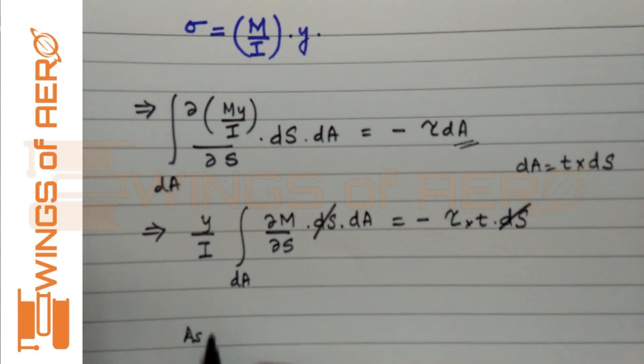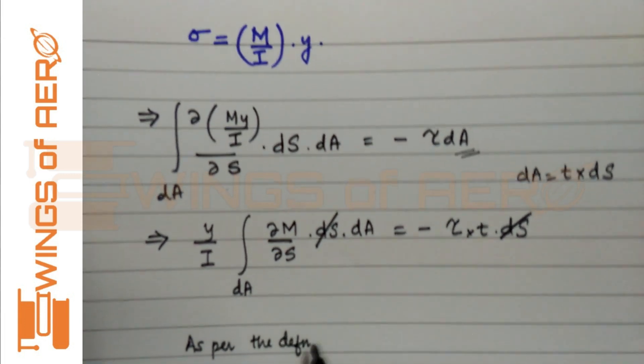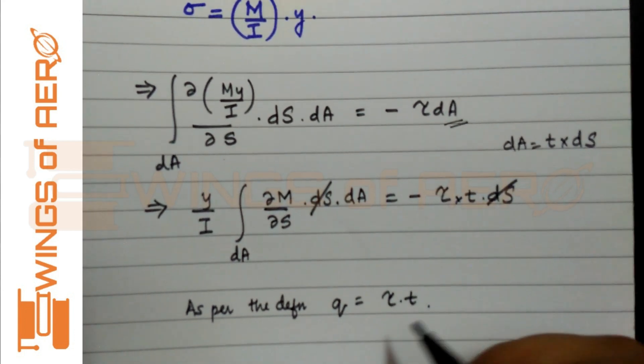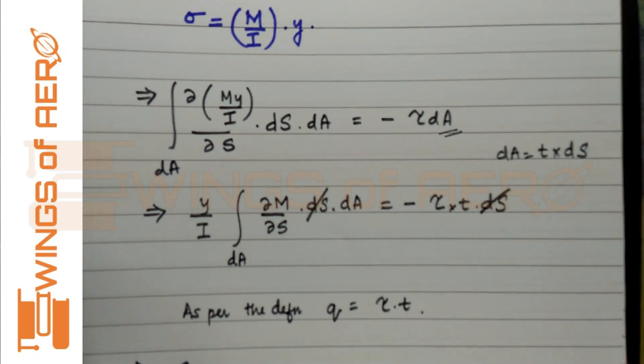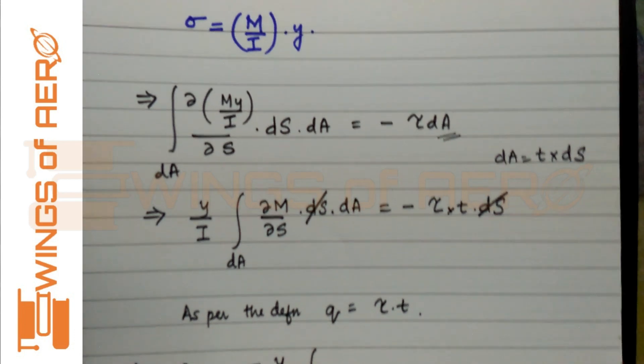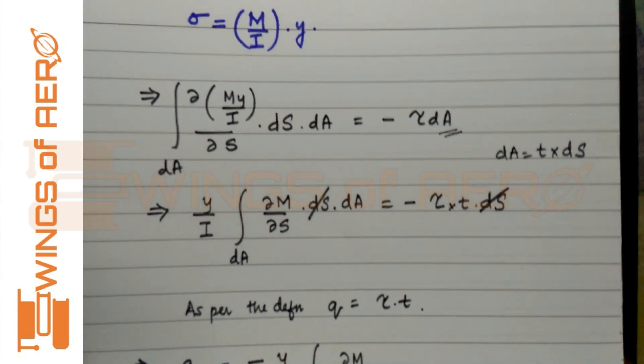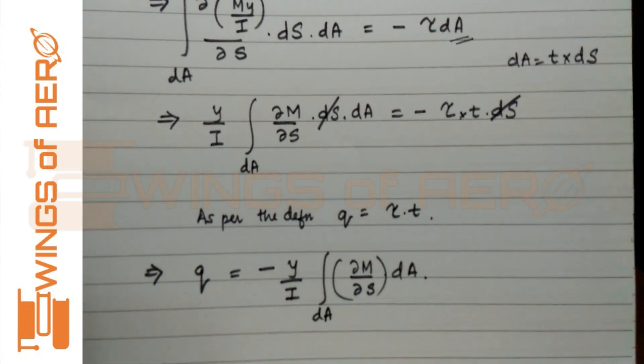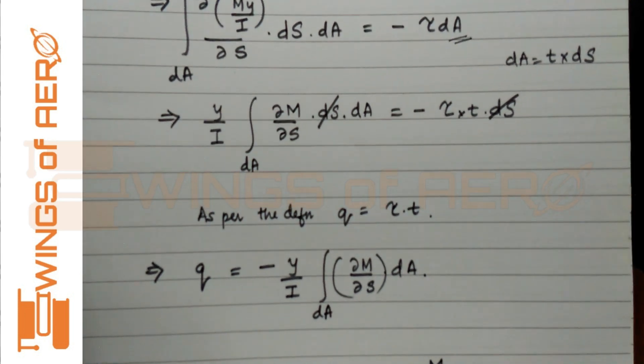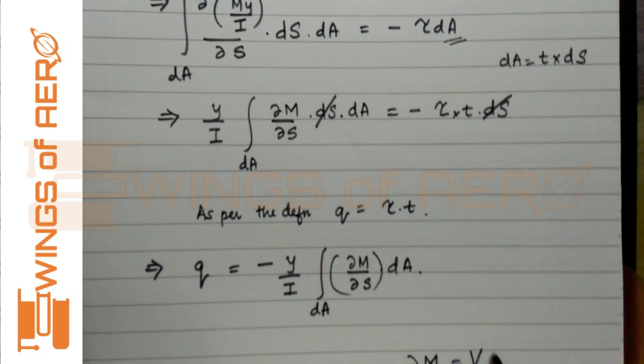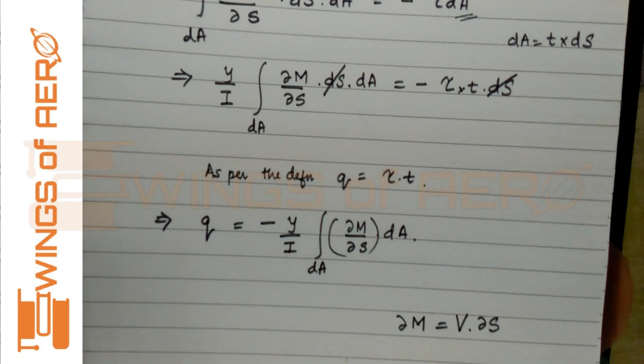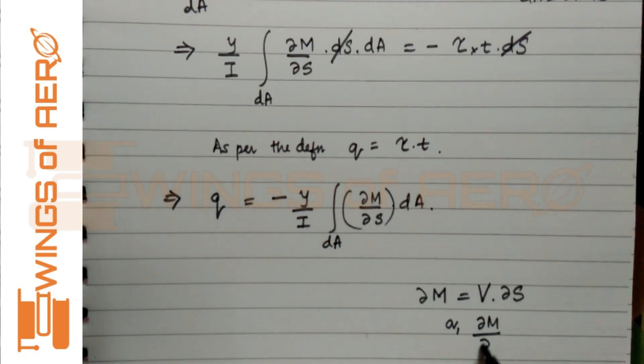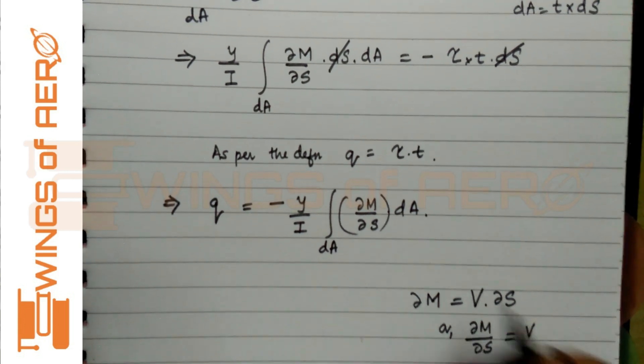Now, as per the definition, what do we know? Q equals tau into t. Can I get here in place of tau into t? Can I write q there directly? So q minus Y by I integral dA, dM by dS into dA. Now, recalling what is dM—it is nothing but the shear force into perpendicular distance, that is dS. So from here, we can write that dM by dS is nothing but V. We are going to substitute this value here.